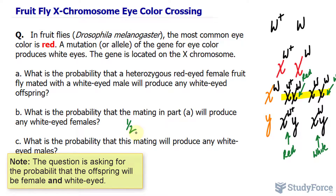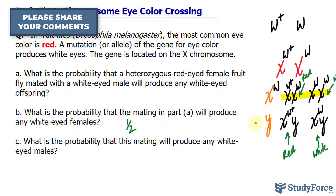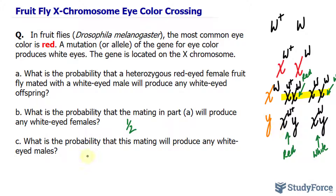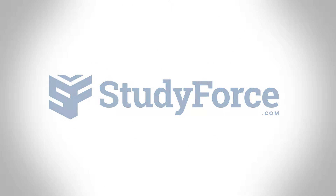Similarly, for question C: what is the probability that this mating will produce any white-eyed males? There's a 1 in 2 chance that the offspring will be male, and of those males, half of them will have white eyes — again a 1 in 2 chance among males. That is how to determine the genotype of offspring when dealing with sex-linked genes on the X chromosome.